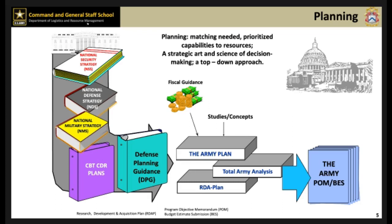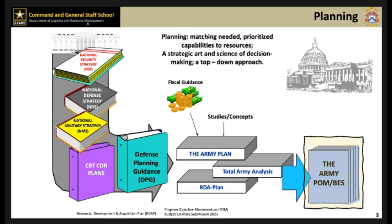This slide illustrates some of the basic planning inputs used to develop the Army's program. This is essentially the first P of PPBE. A key PPBE planning product is an Army force structure that supports the National Military Strategy. TAA decisions are announced in the R-Struck and provide the baseline force structure used in building the initial POM.